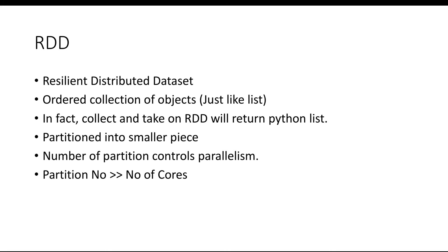Now let's talk about RDD. RDD stands for Resilient Distributed Dataset, and it is just like a list — but the only difference is that this list is a chunked list, meaning a part of the list is stored on one node, another part on another node, and so on. Each of these parts is known as a partition. When the list is divided into chunks, it is said to be divided into different partitions. The number of partitions in an RDD is generally much more than the number of cores in the cluster.